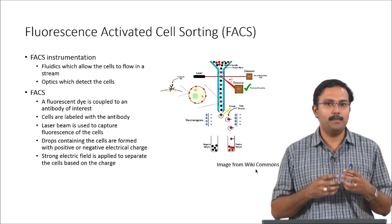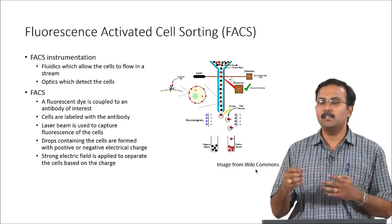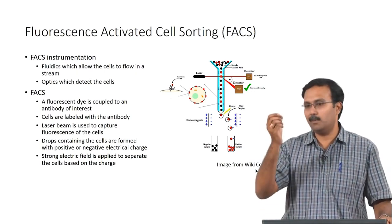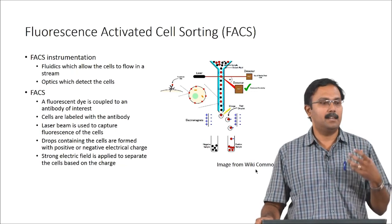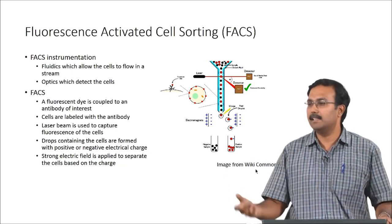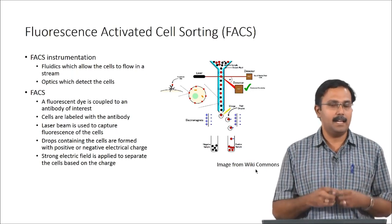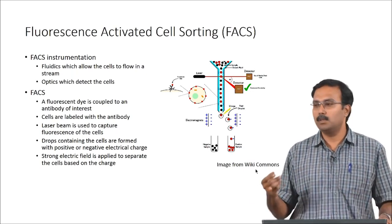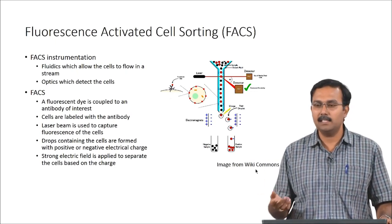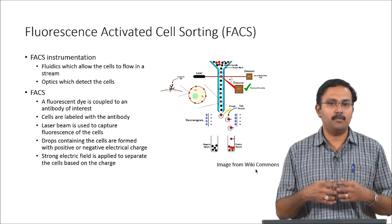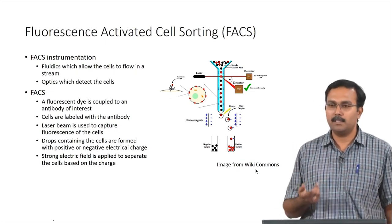FACS has two major aspects in instrumentation: fluidics and optics. The fluidics allows cells to flow in a stream ideally one cell at a time, and the optics detect and identify the cells. A fluorescent dye is coupled to an antibody of interest, cells are labeled with this antibody, and a laser beam captures the fluorescence. Drops containing cells form a positive or negative electrical charge, and a strong electrical field is applied to separate cells based on charge.